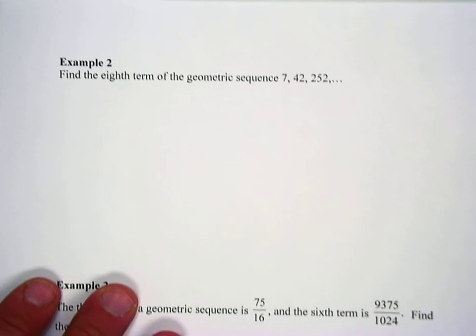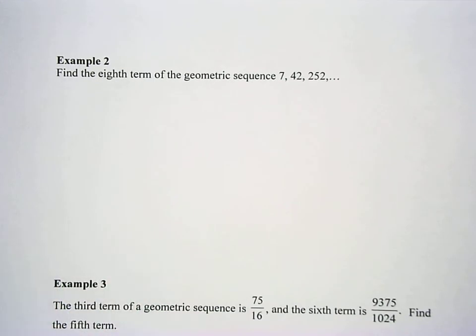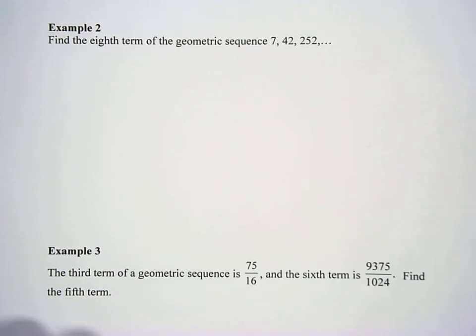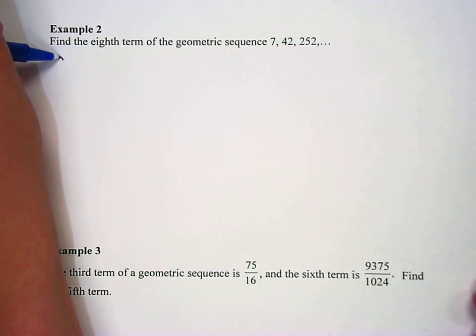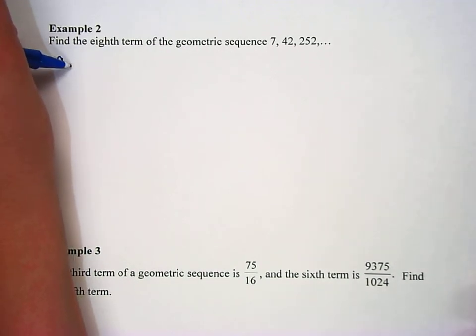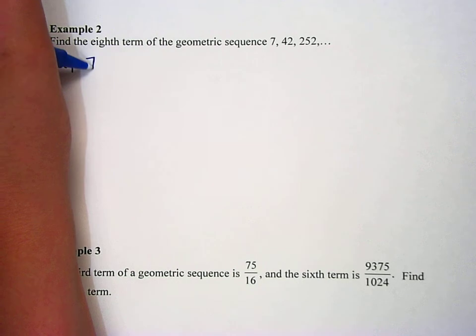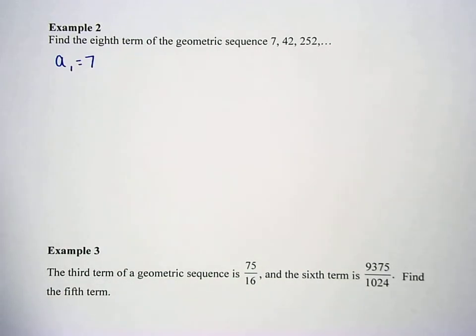Okay, so there's two examples, 1a and 1b. And then we have one last example, and then we'll be done. Example 2 says find the eighth term of the geometric sequence 7, 42, 252. So what's the first term?